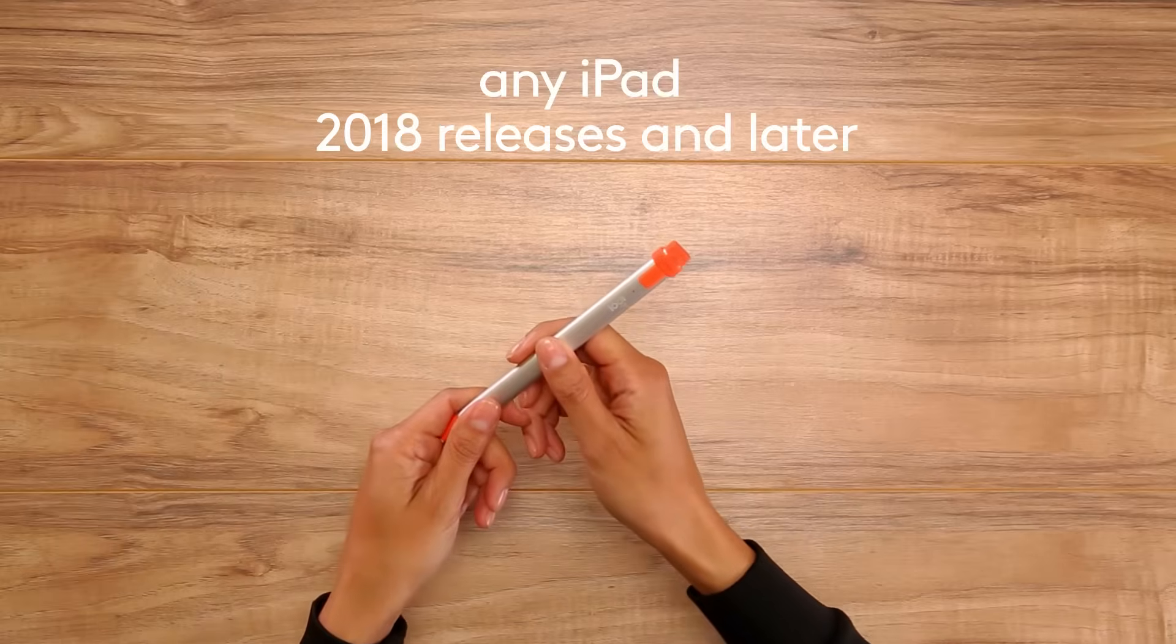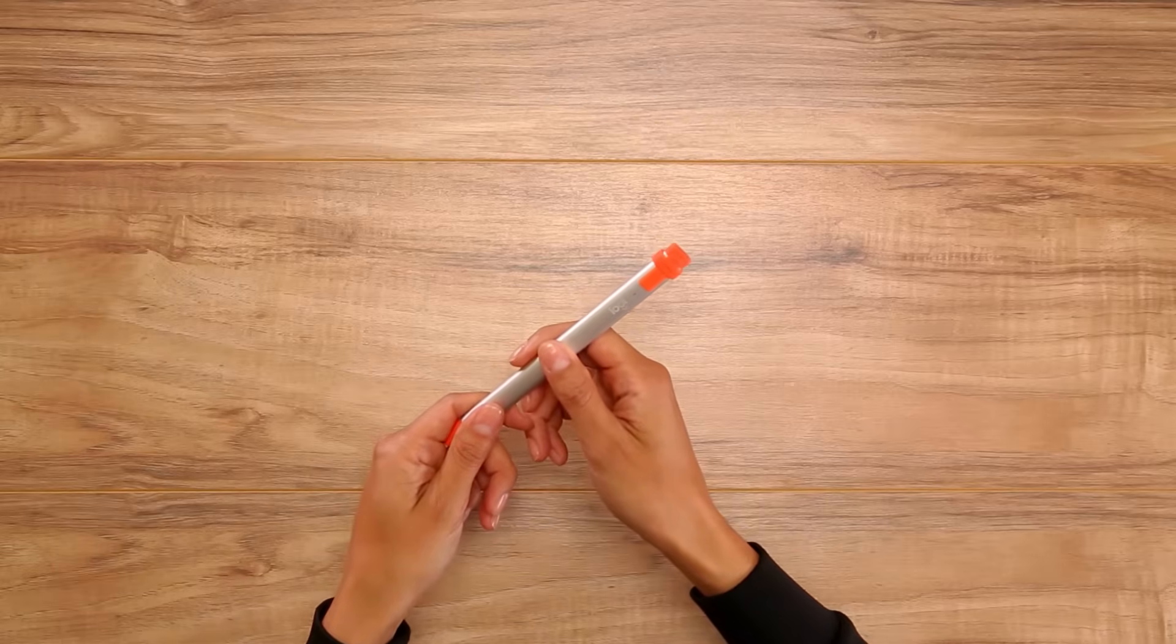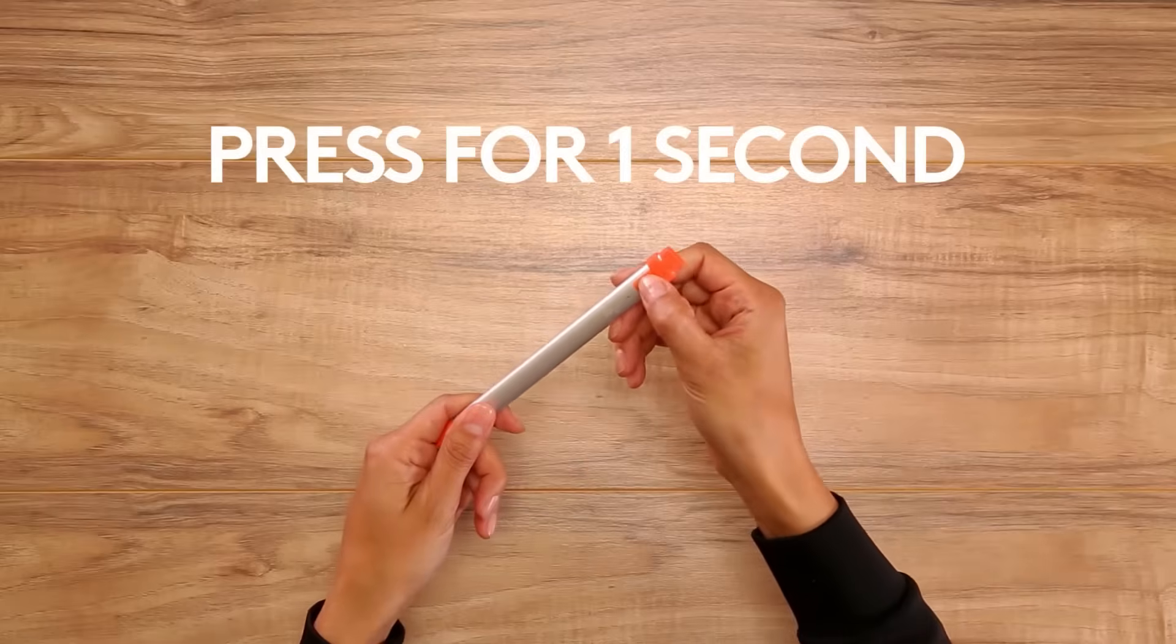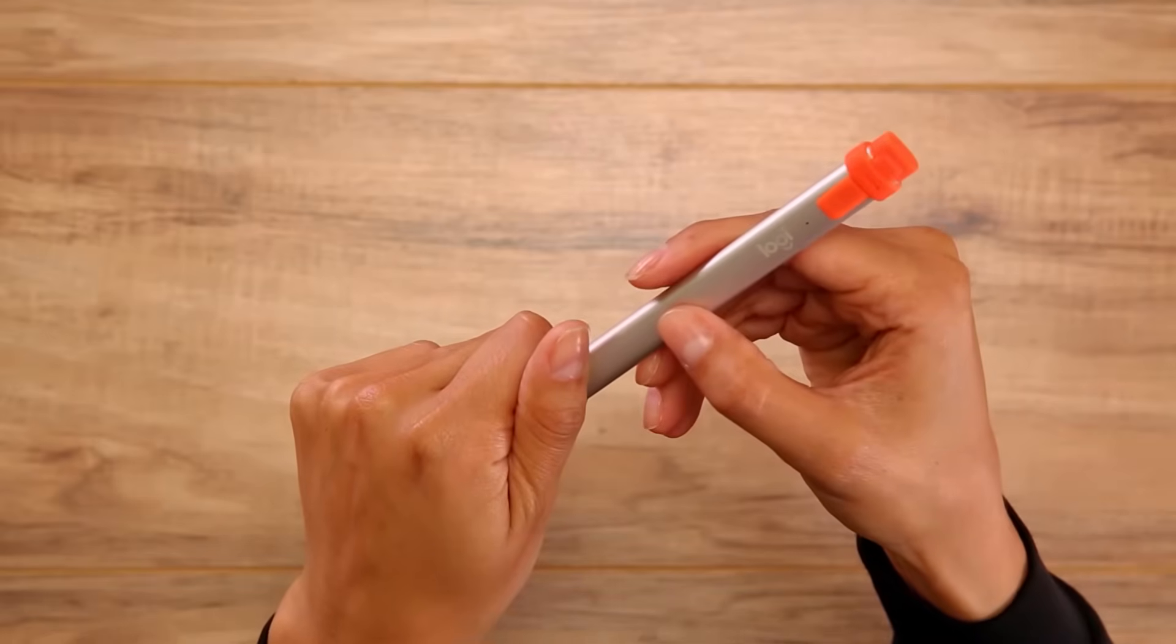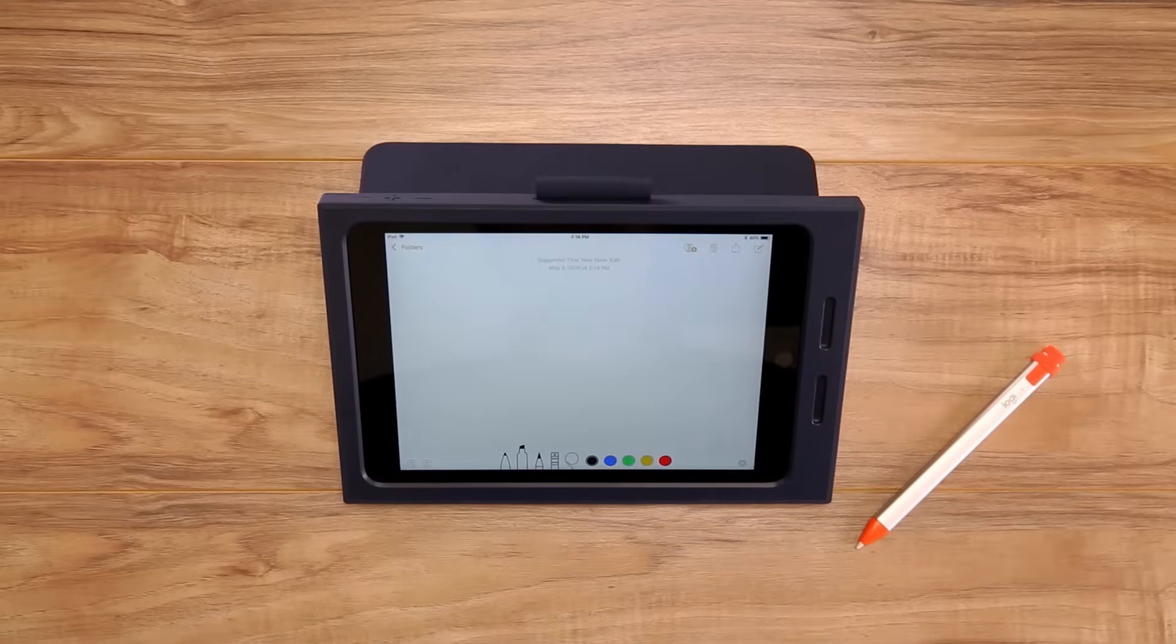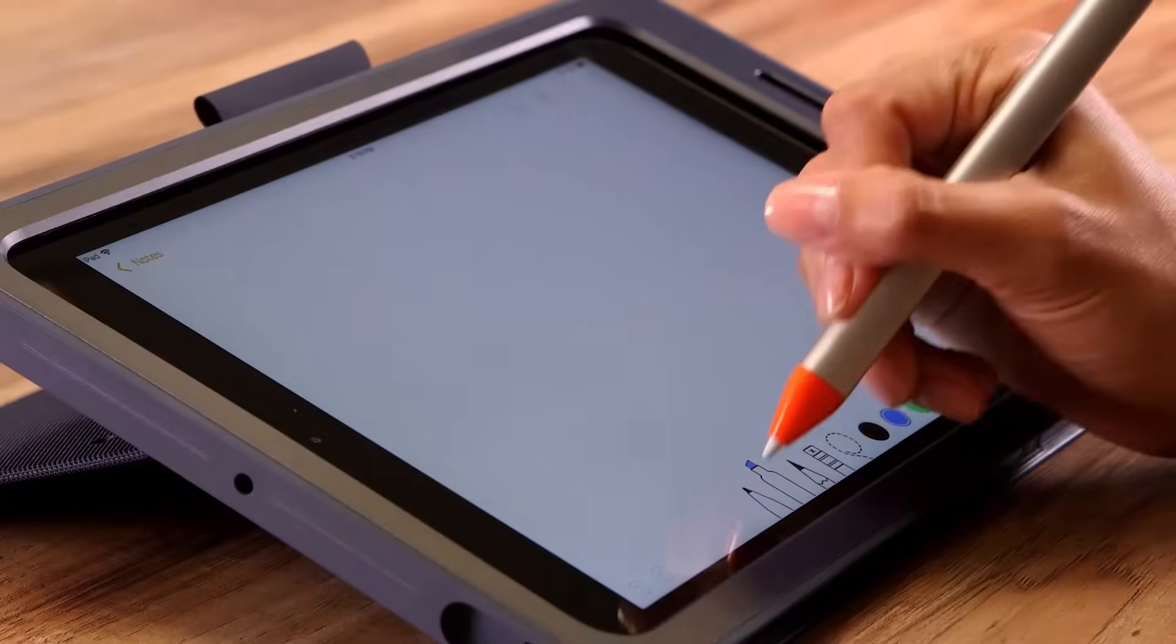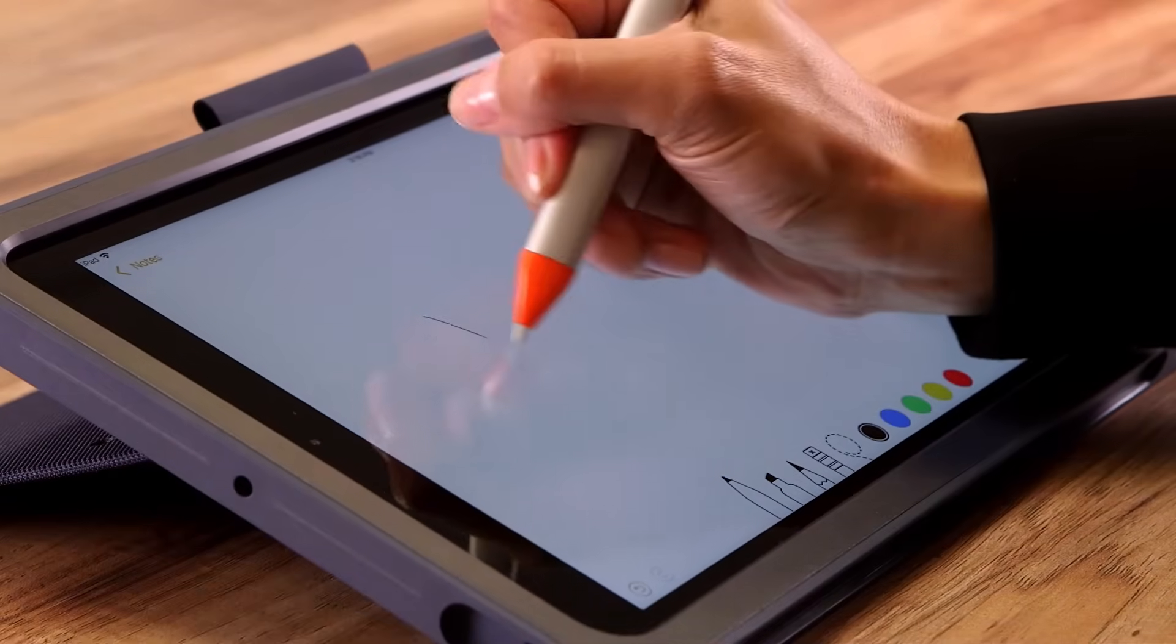Logitech Crayon works with any iPad 2018 releases and later. To start using Logitech Crayon, press the power button for one second. When the LED light is green, Crayon is charged and ready to use. Open any app on iPad that supports digital pencil input, click on the corresponding icon, and start drawing or writing.